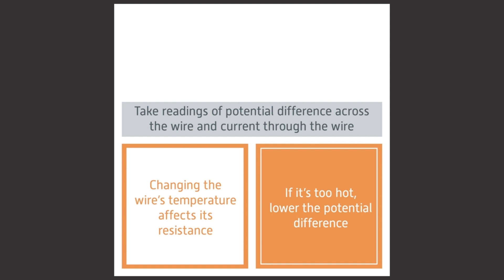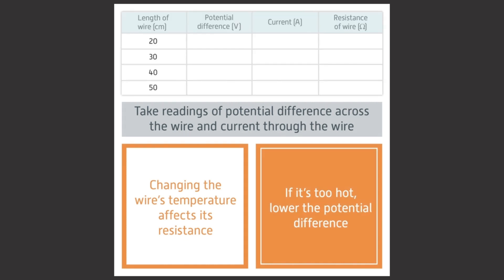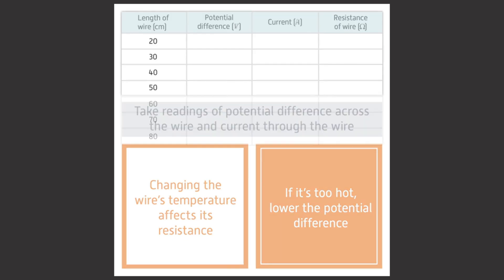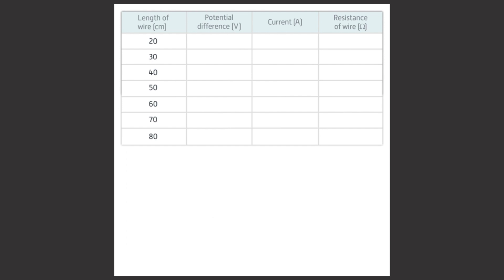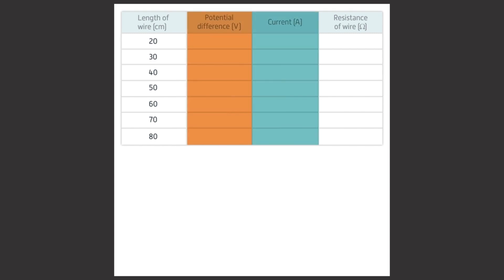It's important the wire doesn't get too hot for safety reasons and because changing the wire's temperature affects its resistance. Now take readings of the potential difference across the wire from the voltmeter and the current through the wire from the ammeter. Put your results in the first row of a results table. The results table needs four columns: length of wire in centimeters, potential difference in volts, current in amps, and the resistance of the wire in ohms. Increase the length of wire between the crocodile clips by 10 centimeters at a time up to 80 centimeters. Each time, take readings of potential difference and current and put your results into the table.